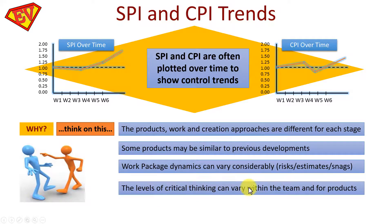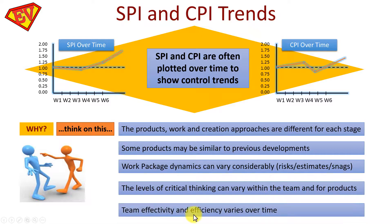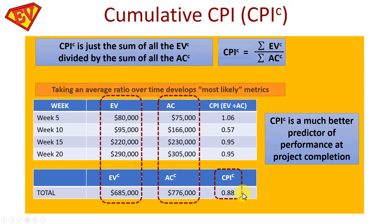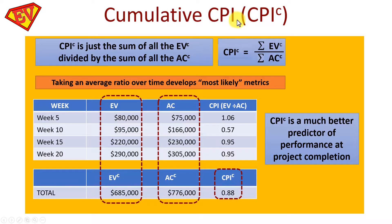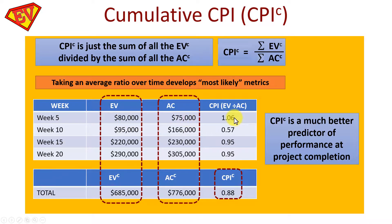Critical thinking levels vary within the team and for different products, and team effectiveness varies over time — simply the natural human condition. So it makes sense to calculate CPI and SPI trends, which leads to the next two formulas. Cumulative CPI — often written CPI with a capital C — is the sum of all Earned Values divided by the sum of all Actual Costs: Cumulative CPI = ΣEV ÷ ΣAC. Here's a simple example over 20 weeks with the CPI for each period shown.